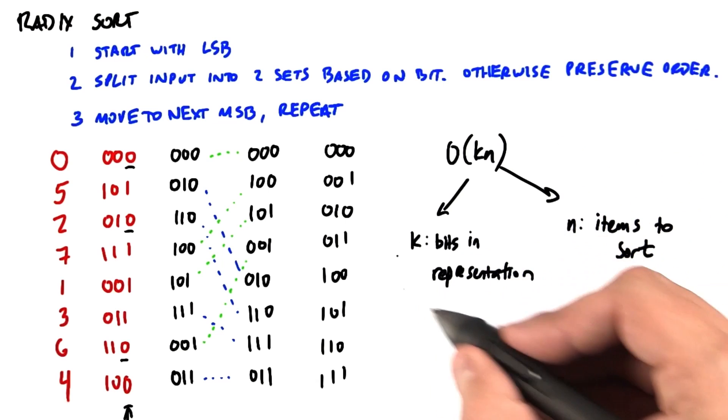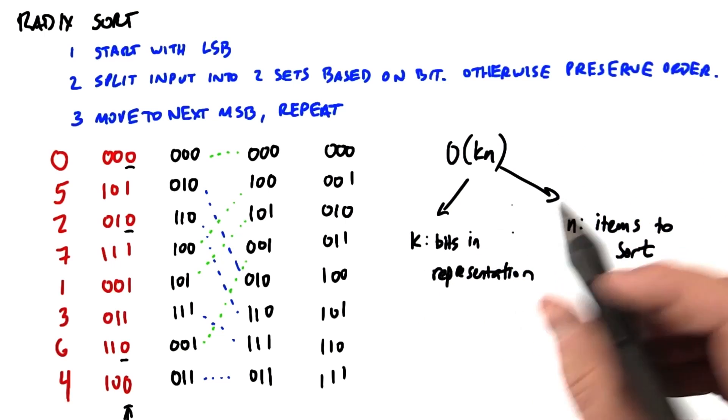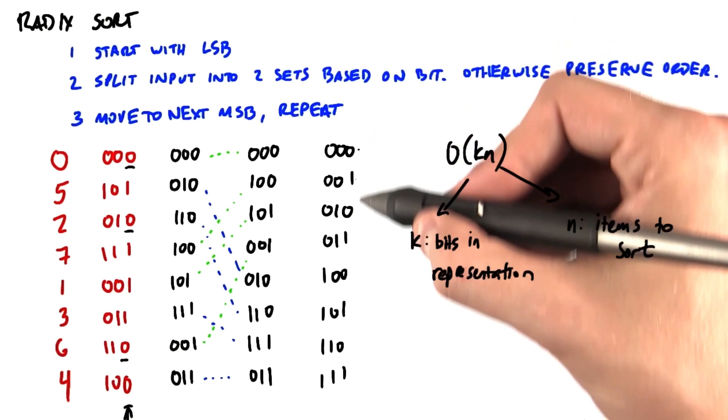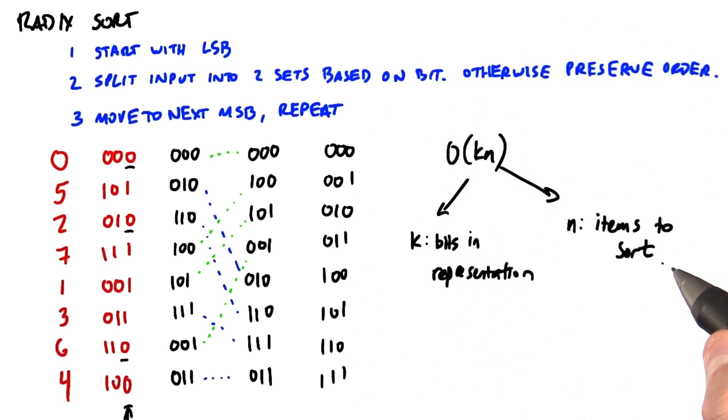meaning the runtime is linear in two different things. First, it's linear in the number of bits in the representation. So this particular integer has three bits in its representation, and it took three stages for us to be able to sort the input. Second, it's linear in the number of items to sort. So we have eight items in the representation here, and so the amount of work is proportional to eight.